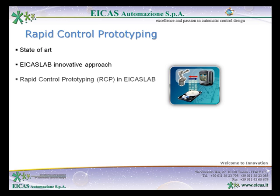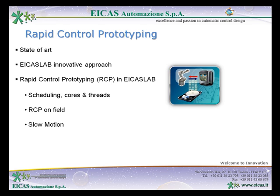We will then describe how you can manage and carry on the rapid control prototyping, that we will sometimes simply call RCP, in ACAS Lab. In particular, how you manage the real-time scheduling, and we will present the three available Rapid Control Prototyping sub-modes in ACAS Lab: the RCP on field, the slow motion, and the SIM RCP.